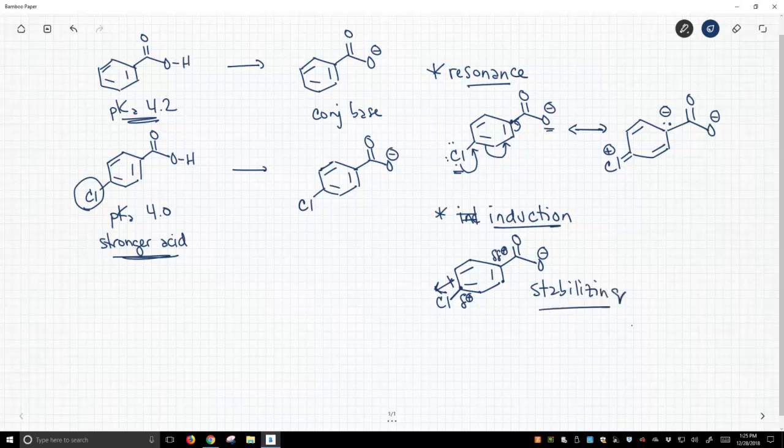In contrast, when we start pumping electron density from the chlorine over towards where there's already a negative charge, this is destabilizing.